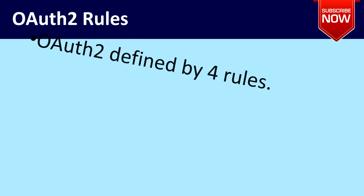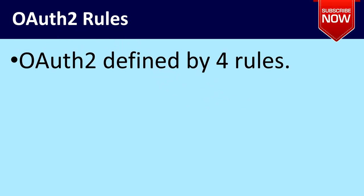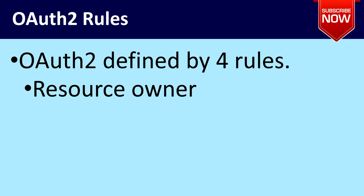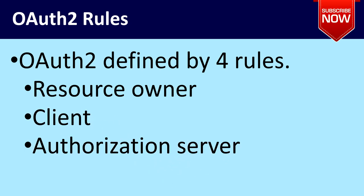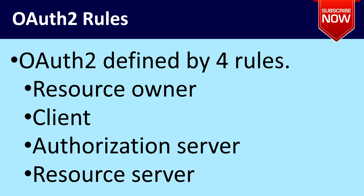Basically, OAuth2 is defined by four roles: the resource owner, client, authorization server, and resource server. These are the four roles we have to follow in OAuth2.